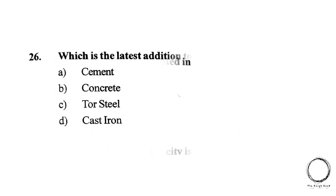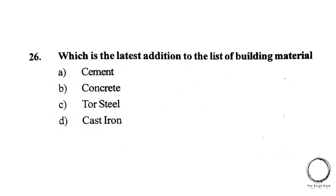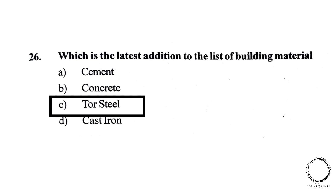Next, which is the latest addition to the list of building materials? A. Cement, B. Concrete, C. Tars Steel, D. Cast Iron. The right answer is option C, Tars Steel.